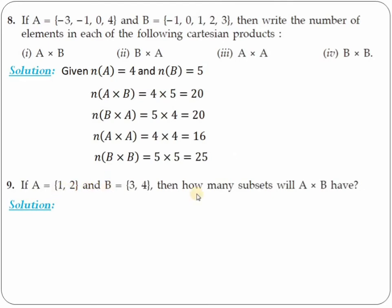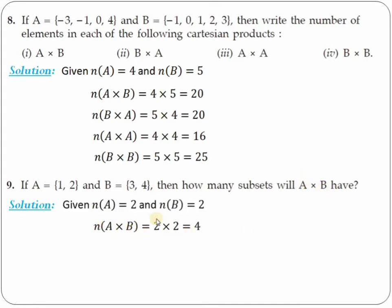For finding the number of subsets of A cross B: we know A has 2 elements and B has 2 elements, so A cross B contains 2×2 = 4 elements. If a set has N elements, the number of subsets is 2^N. So the number of subsets of A cross B is 2^4 = 16.